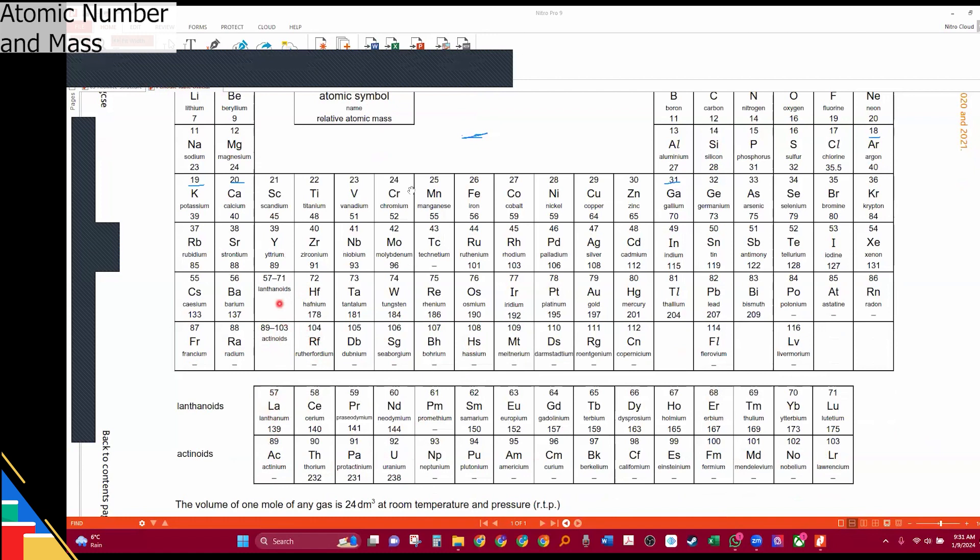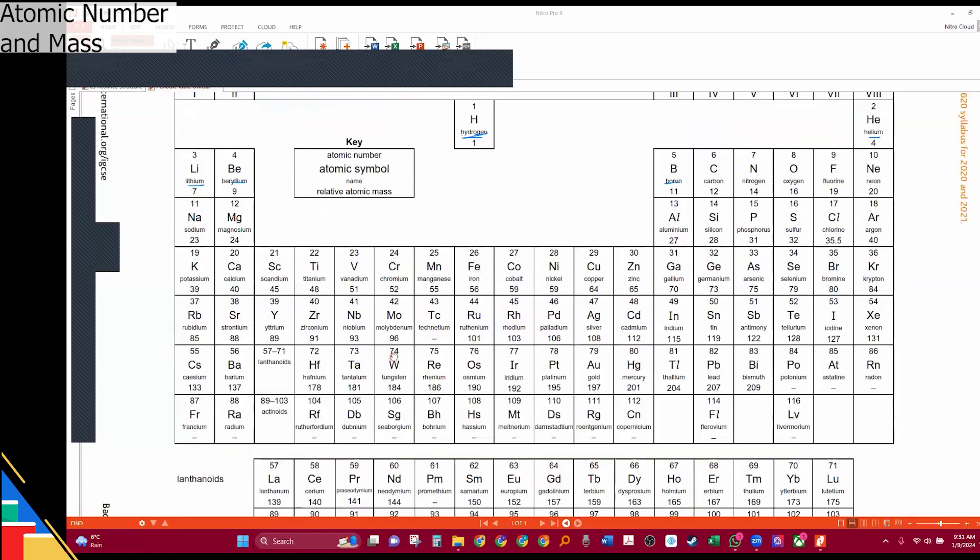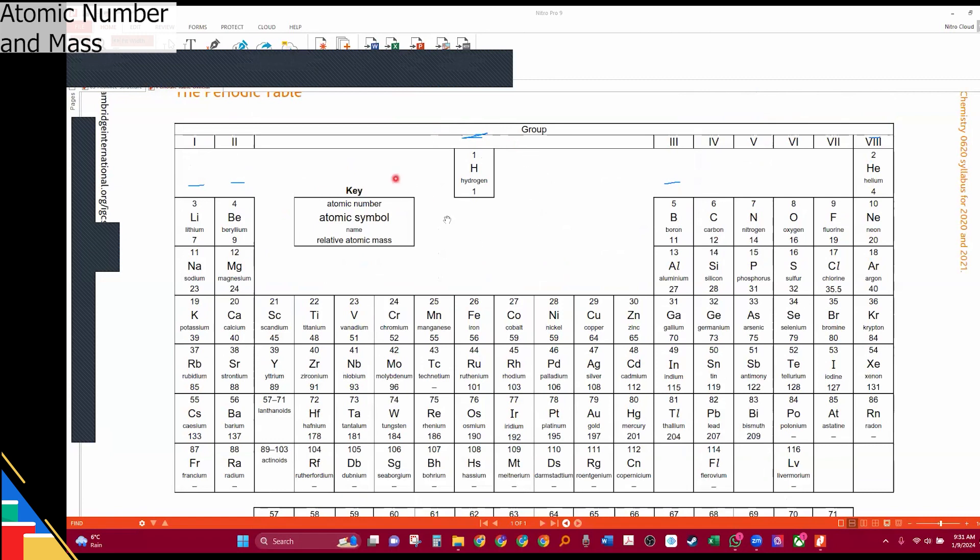Lanthanoids because they are after lanthanum, or actinoids because they are after actinium. So these are 14 elements. They are usually not written inside the periodic table just like hydrogen is not written inside the periodic table, and there are reasons for why that is. Hydrogen has properties that are both metal and non-metal, so this is why we do not write it here.